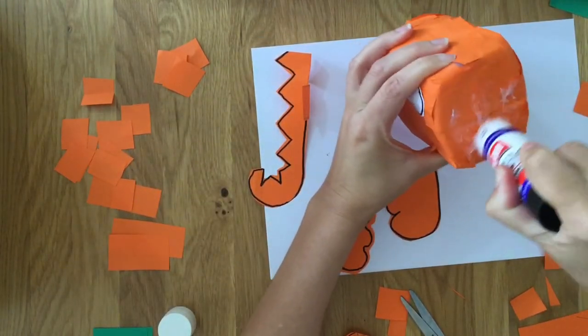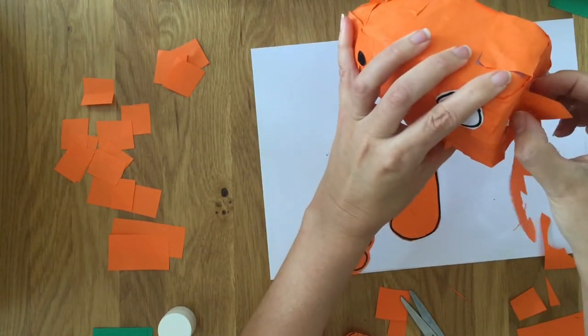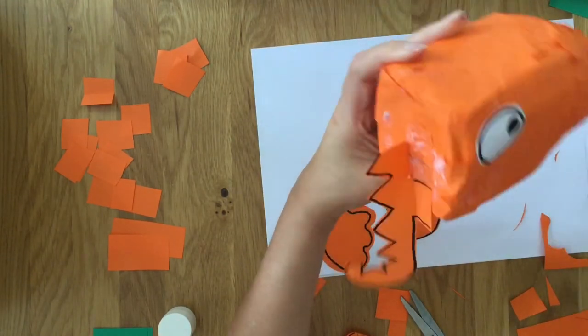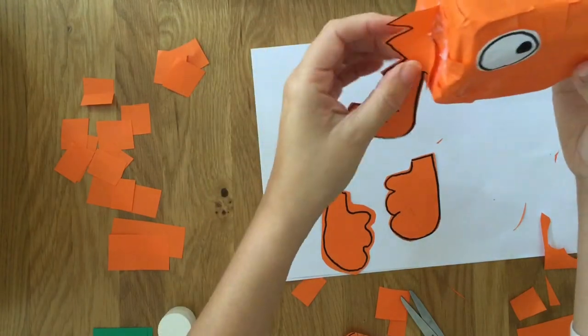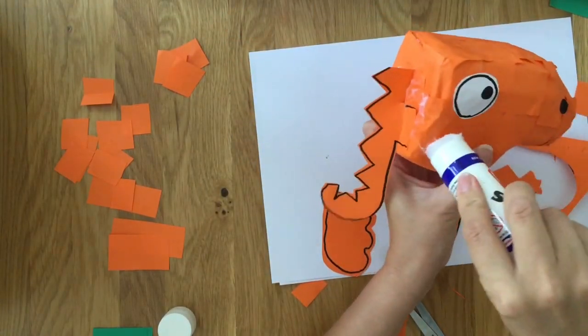So now we can glue our tail onto the back, and we can glue our wings on.